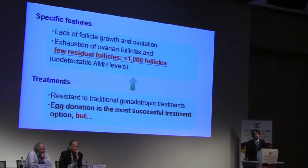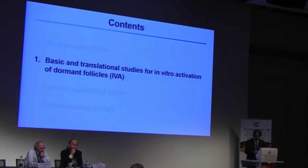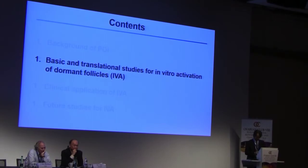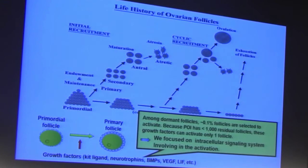Egg donation is the most successful treatment option, but patients prefer to conceive using their own eggs. The primordial follicle is dormant in the ovaries, and growth factors such as KL, neurotrophins, BMPs, FGF, and LIF have been shown to activate primordial follicles to the primary stage. However, among the large number of dormant follicles, only up to 0.1% are selected to activate per cycle. Because POI has fewer than 1,000 residual follicles, these growth factors can theoretically activate only one follicle per cycle — making it almost impossible to use them clinically.